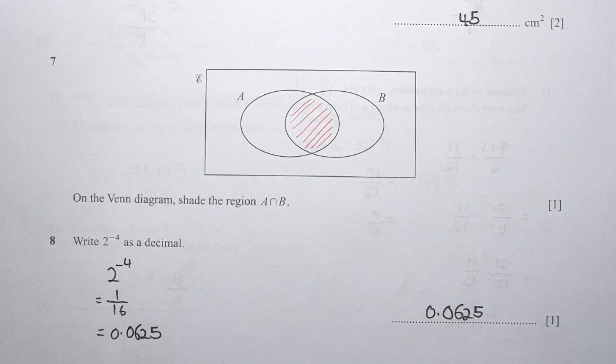For question 8, 2 to the power of negative 4 — because of the negative power, you can bring it down as 1 over 2 to the power of 4. When you calculate it, you get 1 over 16, which translates into 0.0625.